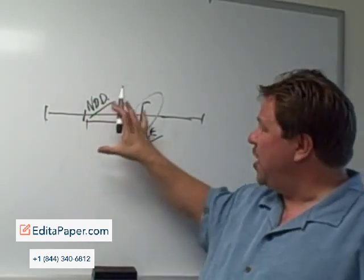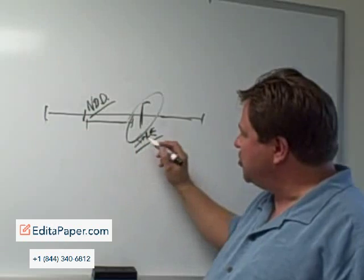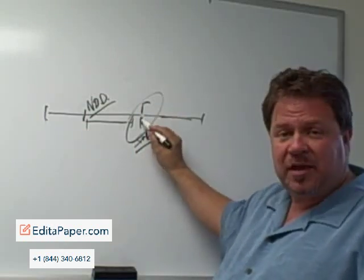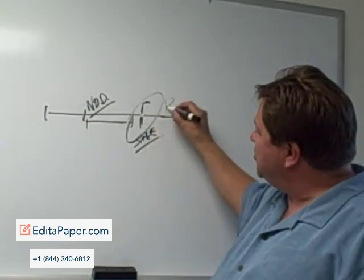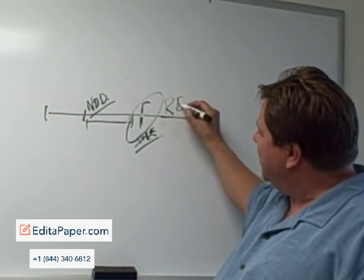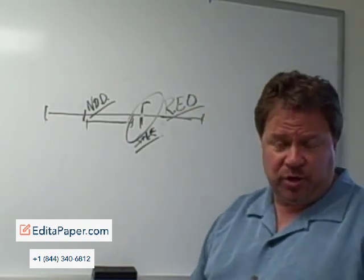But I just want you to be aware of the foreclosure process. And finally, in the foreclosure process, after it goes back to the bank at this point, if the bank owns it now, it's now called an REO, which stands for Real Estate Owned.